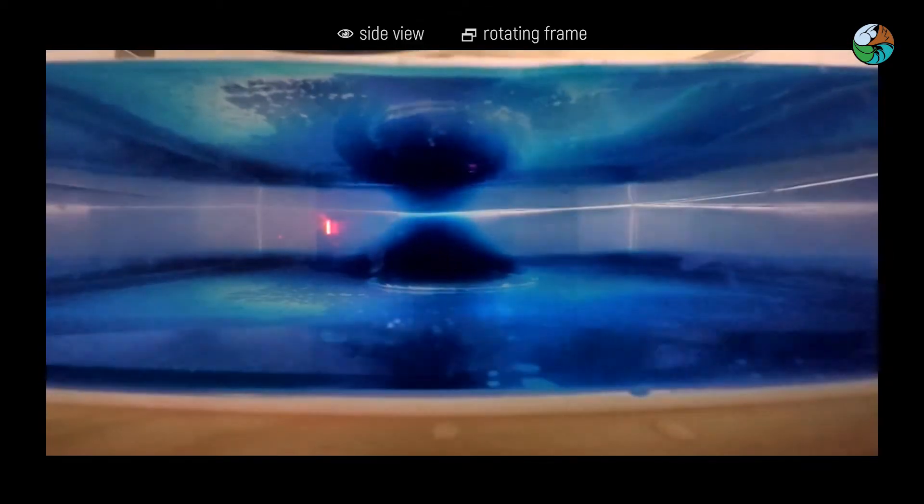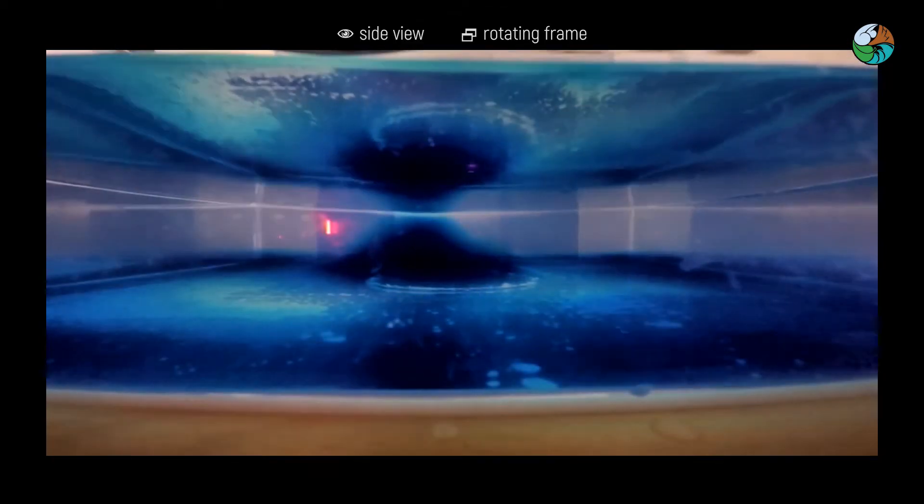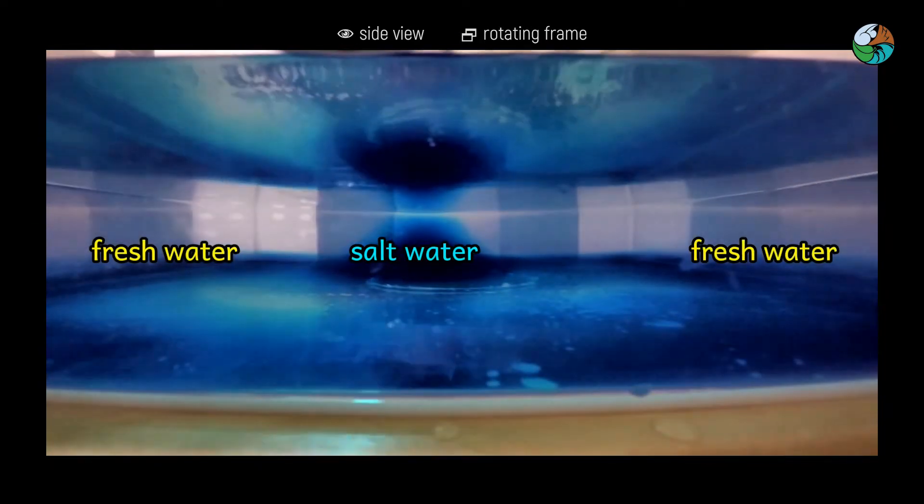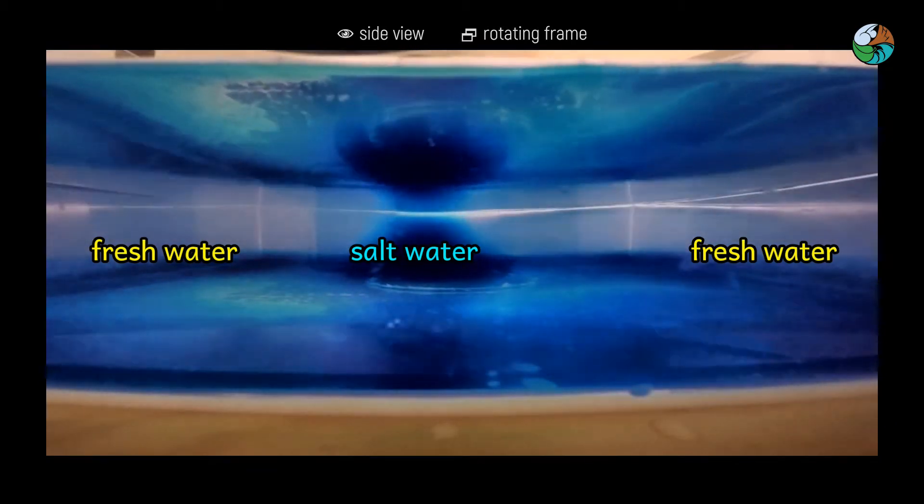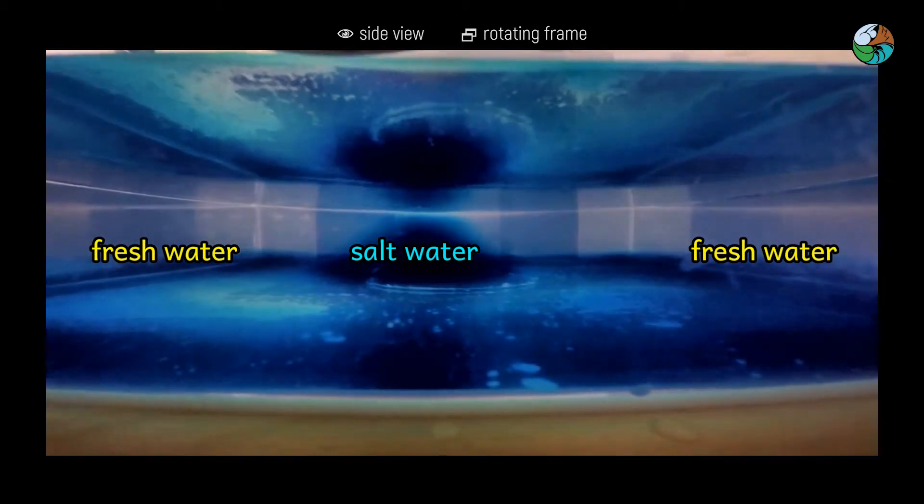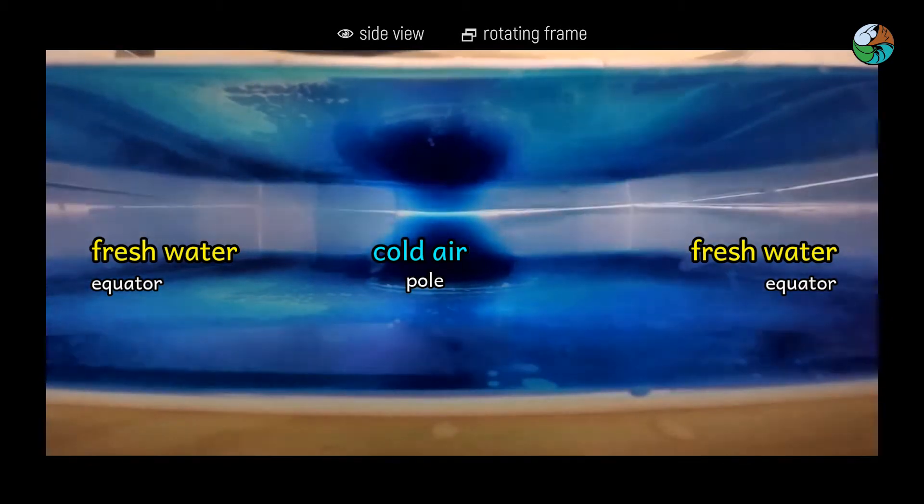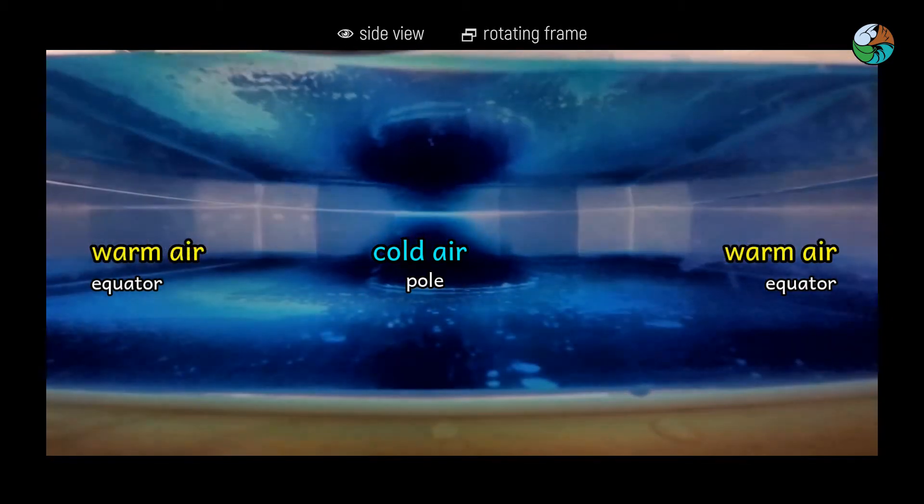We can observe from the side that there is a hill of salt water. It does not mix with the fresh water. Salt water has higher density than fresh water, and therefore it represents the cold polar air. Fresh water represents warm tropical air.